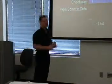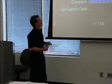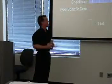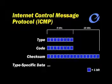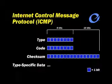ICMP reports back errors — this is the internet control message protocol, responsible for reporting errors back to us. Notice that each one of the boxes listed is one bit, for a possibility of 16 bits total. We see a type field indicating what type of error message we're receiving, also a code and a checksum value. Checksum is for packet integrity.